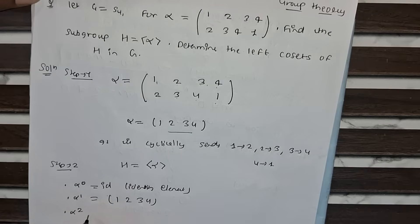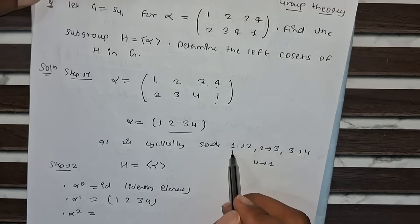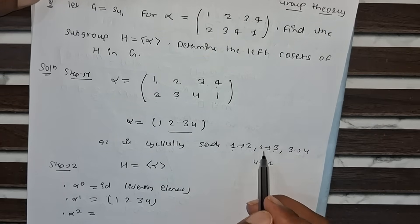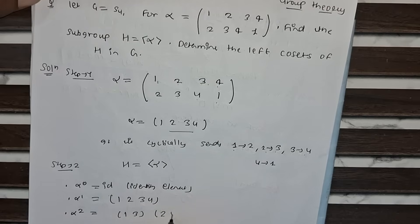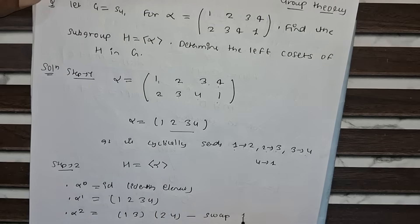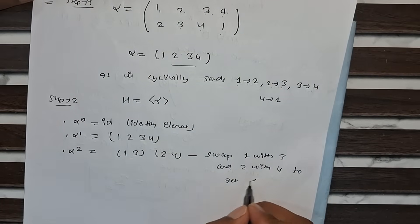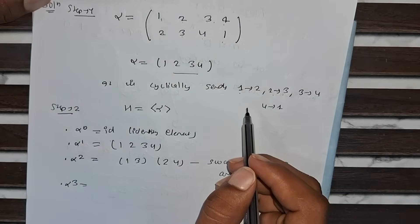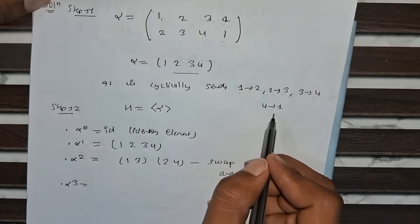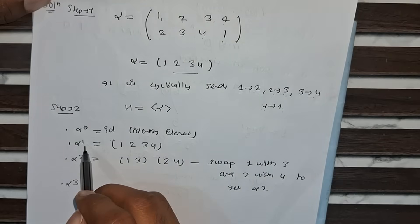Next, go for alpha to the power 2. As you can clearly see that it is a cycle, so swap 1 with 3 and 2 with 4, giving (1,3)(2,4). Now for alpha cubed, apply the reverse cyclic. So applying reverse cyclic means 1 to 4 and 3 to 2, giving the cycle (1,4,3,2).